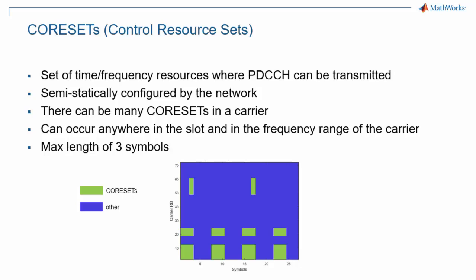A control resource set, or core set, is a set of time frequency resources where PDCCH may be transmitted. Core sets are semi-statically configured by the network. There can be many core sets in a carrier, and they can occur anywhere in the slot and the frequency range of the carrier, but they are at most three OFDM symbols long.